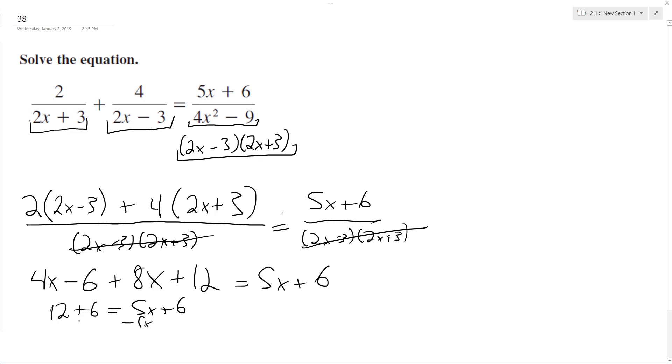Alright, subtract 5x plus 6. And we end up with 7x equals 0 divided by 7, x equals 0. So, and that's it.